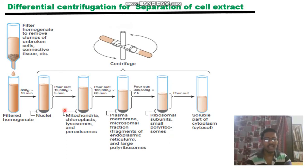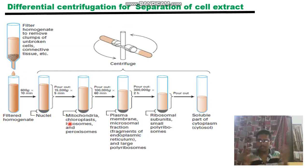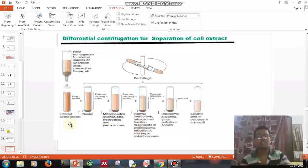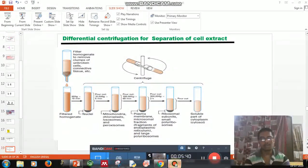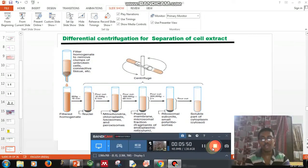One drawback of differential centrifugation is that it is not precise enough to differentiate between organelles of similar density, such as the nuclei and mitochondria. This results in cross-contamination of separated fractions, which is a significant disadvantage. To overcome this, density gradient centrifugation — specifically zonal centrifugation — was developed, which we will discuss in the next section.